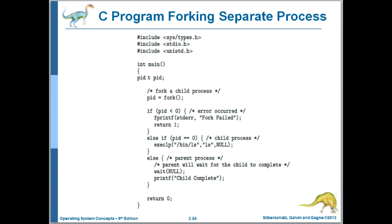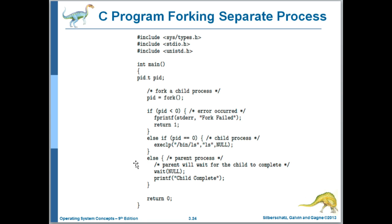Here's what process creation looks like in Linux. The parent runs and hits the fork syscall, which returns twice — once in the parent and once in the child. Both are running the same code at that point. Fork returns the child's PID to the parent and a PID of 0 to the child — or less than 0 if the child couldn't be created. The else-if condition is true for the child, so in this example the child executes the ls command. The else branch is the code executed by the parent, which uses the wait system call to wait for the child to complete.